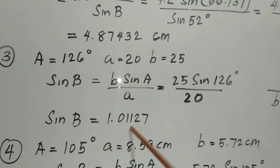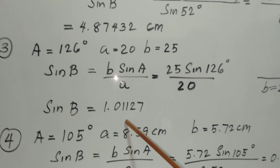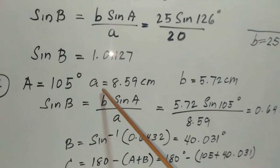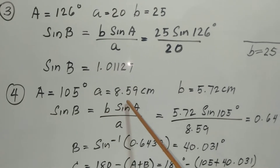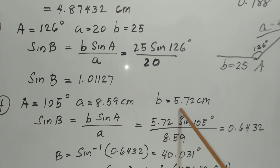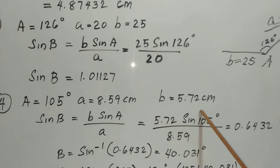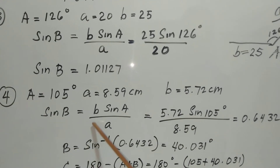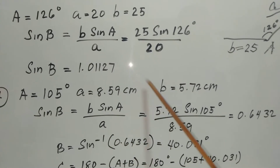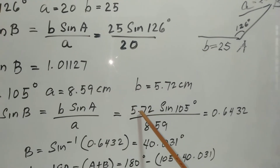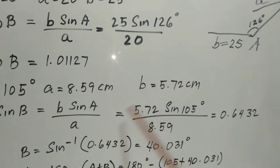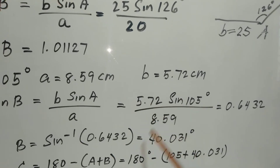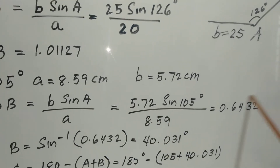For number four, we are given angle A equal to 105 degrees, side a equal to 8.59 centimeters, and side b equal to 5.72 centimeters. Using the Sine Law, sine B equals b times sine A over a. Substituting all the values and computing sine of 105 degrees, we get 0.6432.